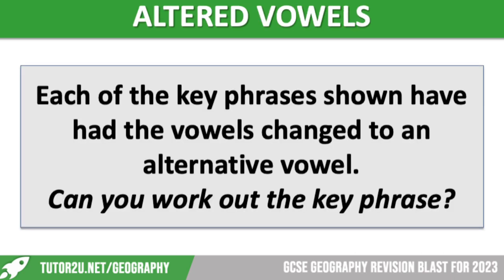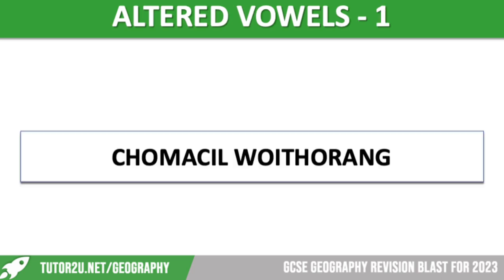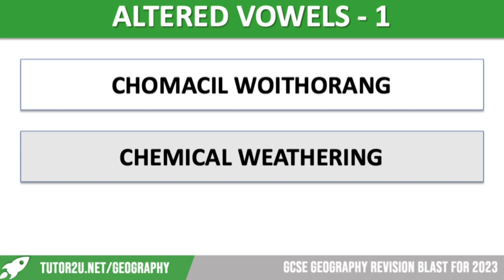We're going to move on to altered vowels. Each of the key phrases or terms shown have had the vowel changed to an alternative one. Can you work out the key phrases? Remember, these are not anagrams — they simply have had their vowels swapped over. Our first one is a process happening at the coast. It is chemical weathering. A good example of this would be acid rain.